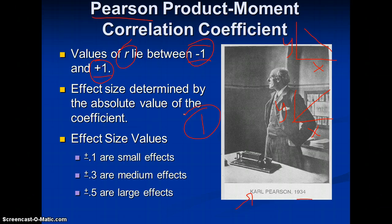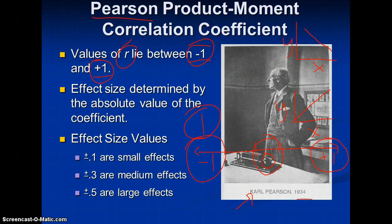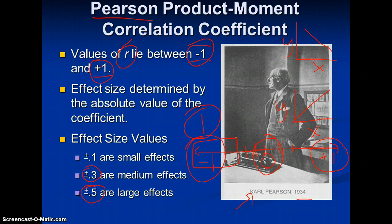The closer you get to zero, the weaker the relationship. On a scale from negative one to positive one, with zero in the middle, plus or minus 0.1 are small effects; plus or minus 0.3 are medium effects; and plus or minus 0.5 or greater are large effects.